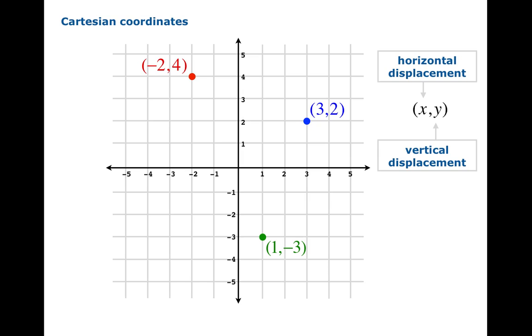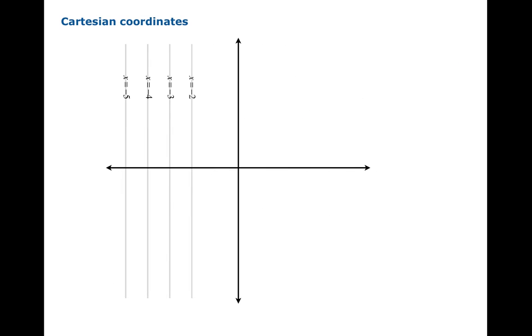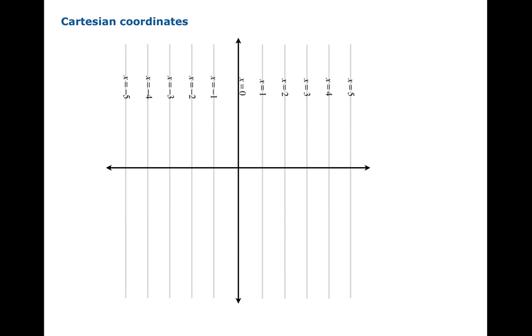So displacement is the right description for what these coordinates are telling you. Now we could isolate out certain collections of points, so by setting the first coordinate, the so-called x coordinate, equal to a constant, you get a vertical line.